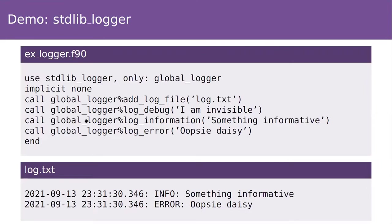What we're doing in this example is connecting the global logger to a log file on disk and logging a couple of messages: a debug message, an info message, and an error message. If you look at the output of the log file, you see that the info and the error messages were printed, but the debug message was not — showing that the global logger by default is configured to only report messages at info level and higher. So you can set the level of detail at which you want the logger to output. This is really just scratching the surface of what you can do with the logging module; the design is really flexible.